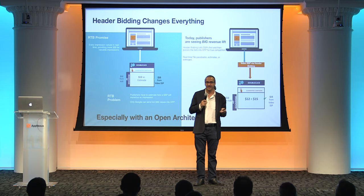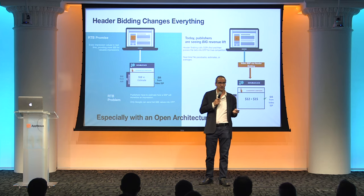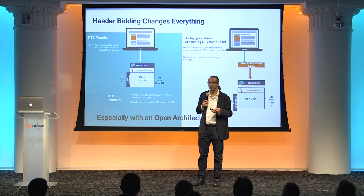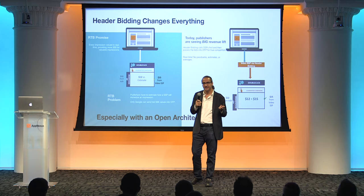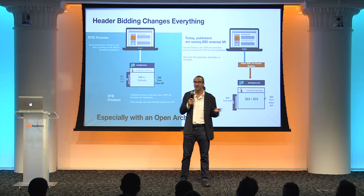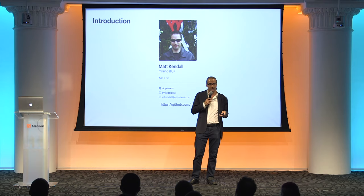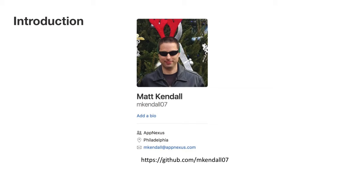RTB stands for real-time bidding, and on the AppNexus platform this is happening five million times a second — bidding on impressions to get the top dollar for publishers. The challenge is that when you combine that with ad serving, for example Google's DFP product, it tends to be more of a black box. Header bidding has sought to crack that open and create a transparent auction. I'd now like to introduce Matt Kendall, who'll walk you through more of the details.